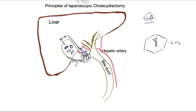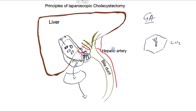Once the gallbladder is completely released, the surgeon inserts a bag with an instrument, places the gallbladder inside the bag, and withdraws it through the belly button. The surgeon then inspects the area to make sure there is no bleeding, leakage of bile, or any other issue.